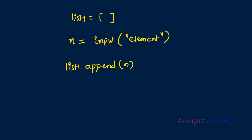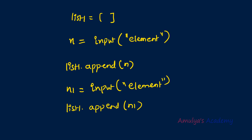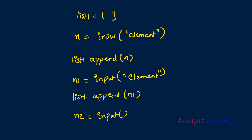Now one element is added to list1. If I want another element, I need to call the input function again, ask the user to enter the element, and append it. For a third element, the same thing again — take input, then append. This is one way to take user input for a list, but as we can see, this is not the best way.